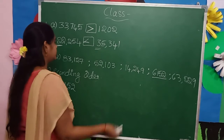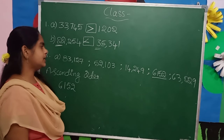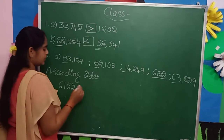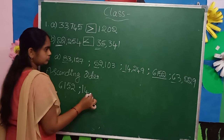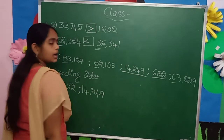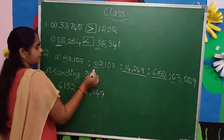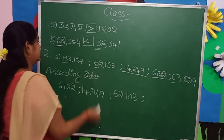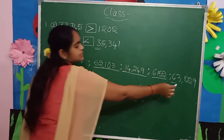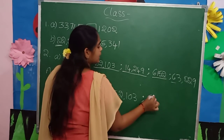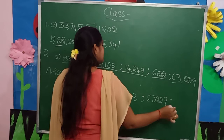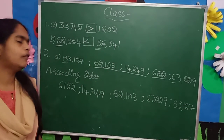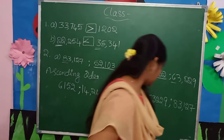Next, among the 5-digit numbers: 14,249 comes next. Then 52,103. Then compare 83,000 and 63,000 — 63,229 is smaller, so next is 63,229. Last is 83,127. So ascending order: 6,152; 14,249; 52,103; 63,229; 83,127.